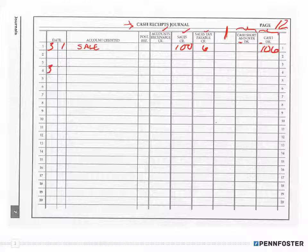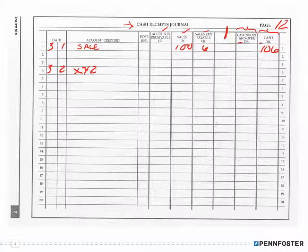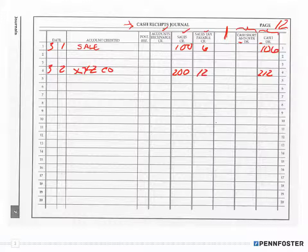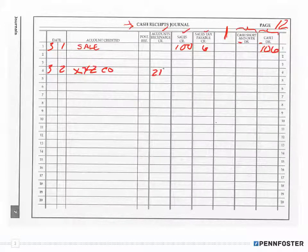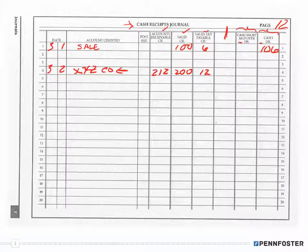Let me do one more quickly. On the 3rd, I make a sale to XYZ Company on account, on credit. The sale is for $200 plus 6% sales tax, so the accounts receivable is $212. My sale is $200, and my sales tax is $12.